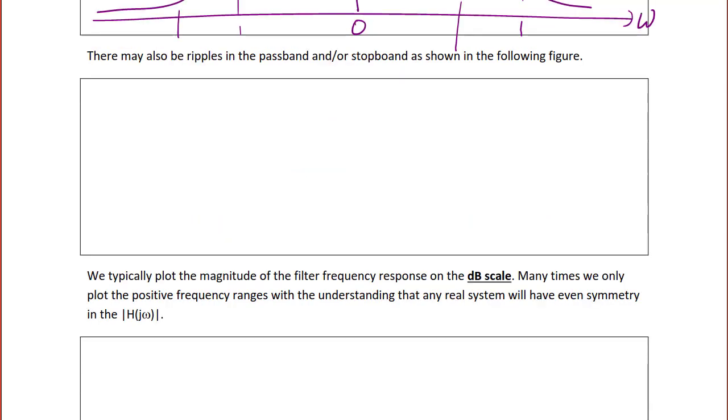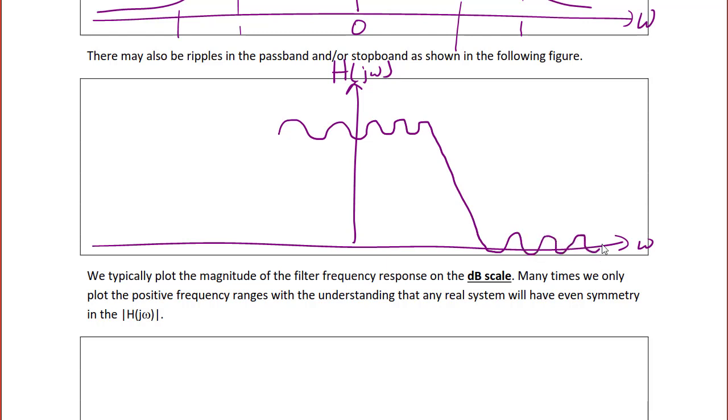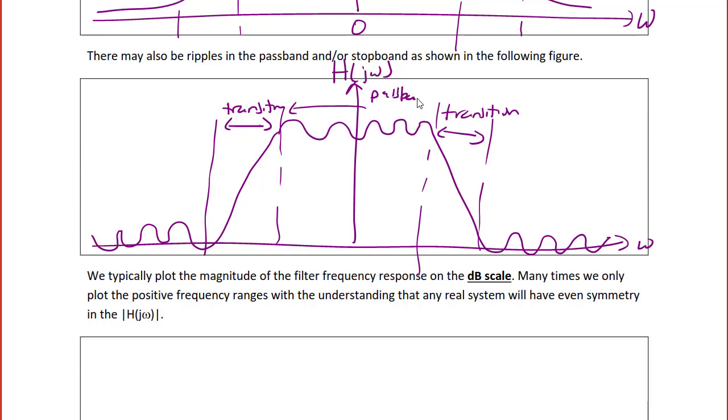There may also be ripples in the pass band and or stop band, as shown by the following figure. So once again, here are our axes. This is omega and the magnitude of H of J omega. And now we see that we have a pass band that has ripples, that then dies off with a gradual transition to the stop band that has ripples. So once again, this area here would be our transition. This area at the top is our pass band and here is our stop band. And there is one on both sides.